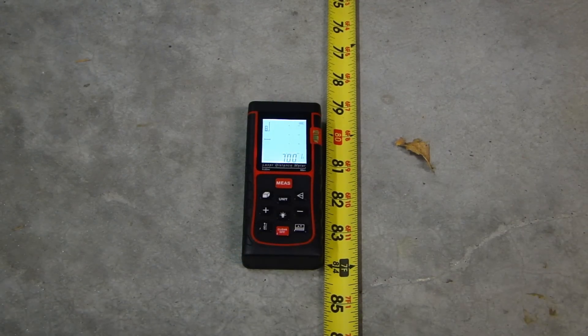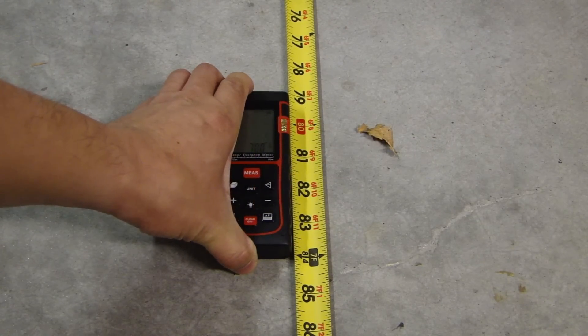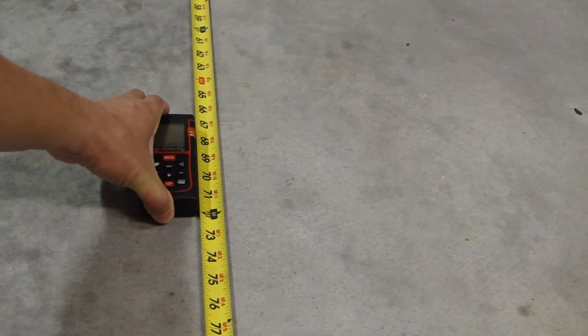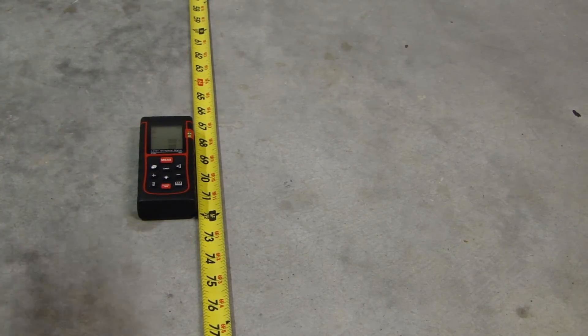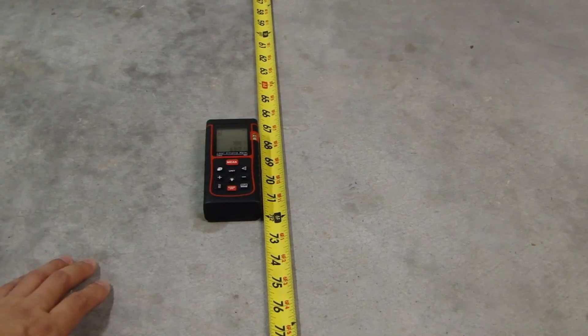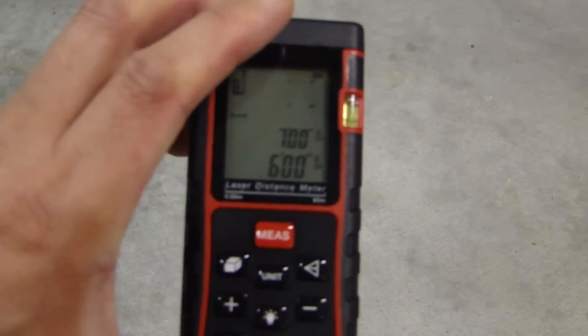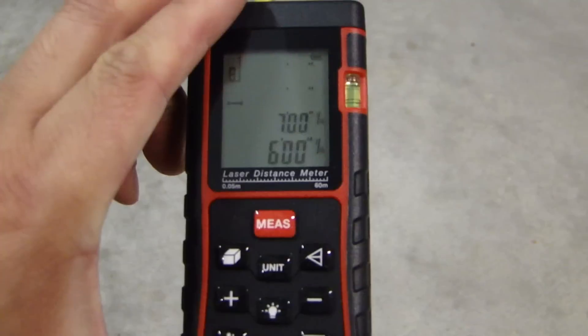At the bottom of this tool. Now let's move this up to six feet and do a second measurement. Press measure. You can see the laser beam turn on. Now we'll press measure again. Let me show you. Now the second measurement is at the bottom, six feet.